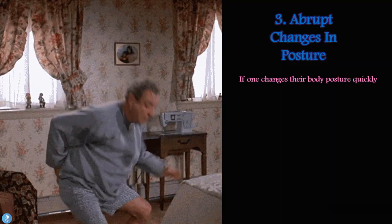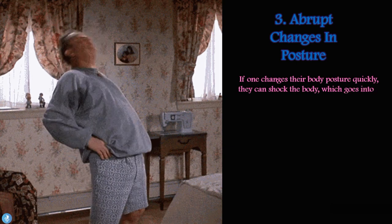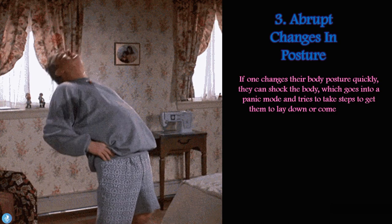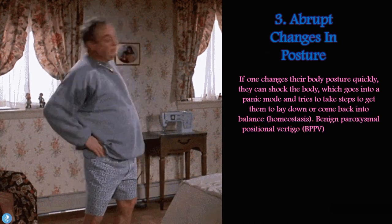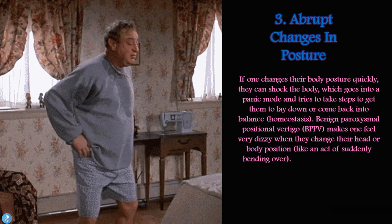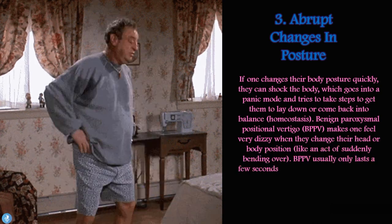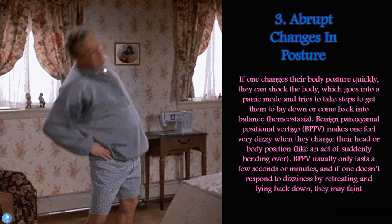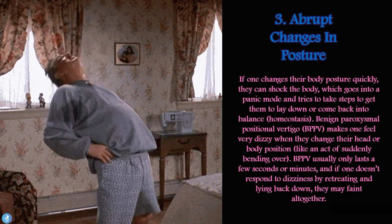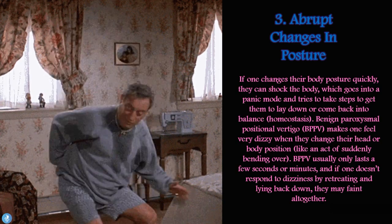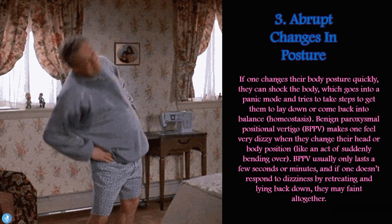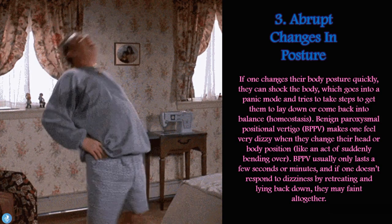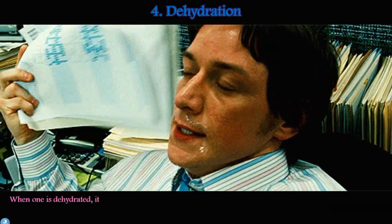Number three is abrupt changes in posture. If one changes their body posture quickly, they can shock the body, which goes into a panic mode and tries to restore balance — a process called homeostasis. Benign paroxysmal positional vertigo, also known as BPPV, makes one feel dizzy when they change their head or body position, like suddenly bending over. BPPV usually only lasts a few seconds or minutes, and if one doesn't respond by retreating and laying back down, they may faint altogether.